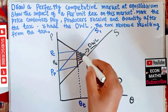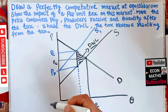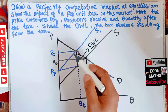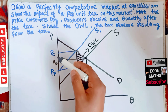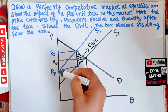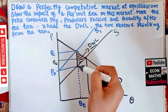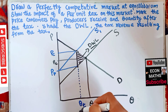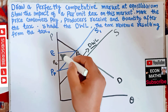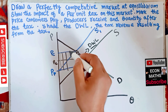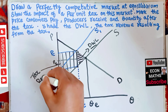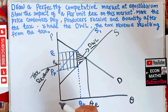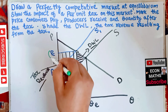Those three points create the dead weight loss. Now, the tax revenue is the box formed from the tax — that is, the difference between PC and PP, and between supply and demand at the equilibrium quantity — the quantity after the tax. So this box gives us the tax revenue.